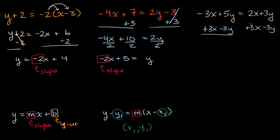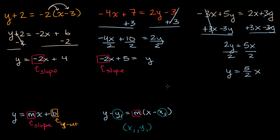I add three x to the left but I have to do it to the right to maintain the equality, and I subtract three y from here but have to do it on the left-hand side as well. Five y minus three y is two y, equal to two x plus three x which is five x. Dividing both sides by two, I get y is equal to five halves x. Your b is implicitly zero — you could write plus zero. So your slope is five halves, and your y-intercept is zero: when x is zero, y is zero.